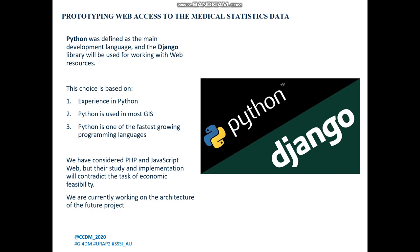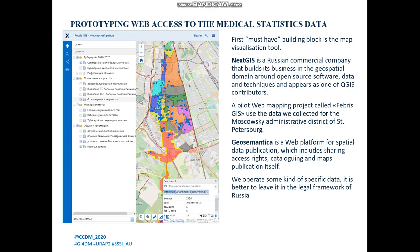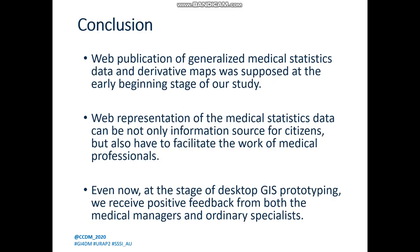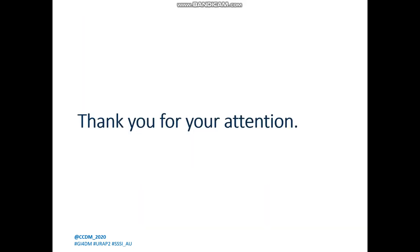We are currently working on the architecture of our future project. The first must-have building block is map visualization tools. NextGIS is a Russian commercial company that built a business in the geospatial domain around open source, for example working with QGIS. We have a pilot web mapping project called FabrizGIS, using data collected in the Moskovsky Administrative District of St. Petersburg. Another example is Geosinematica, a web platform for spatial data publication — a developer can add a timeline to the map to explore time-development data, which is extremely important for our study. In conclusion, publication of medical statistics via Geosinematica was considered at the early beginning stage of our study. Thank you for your attention.